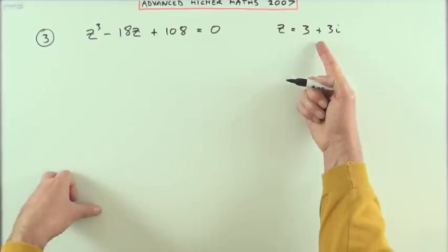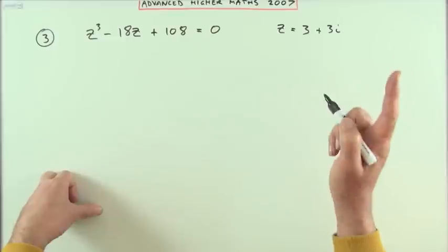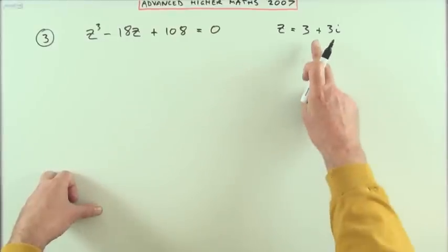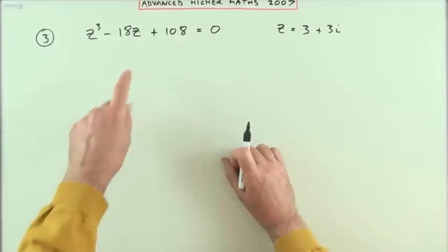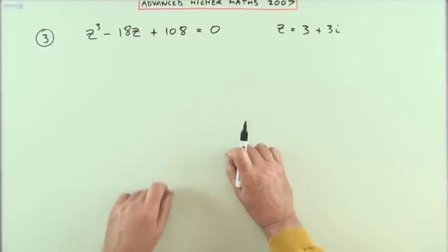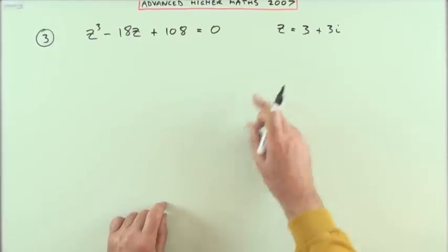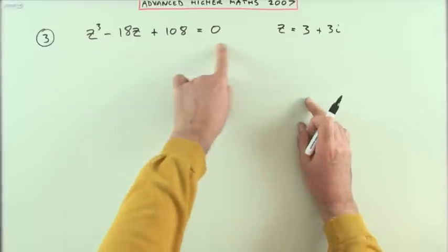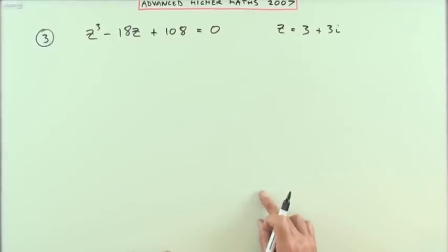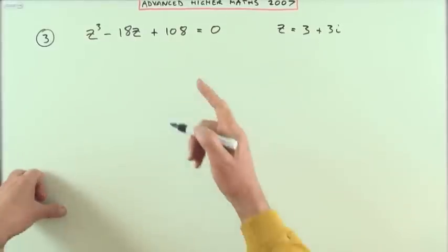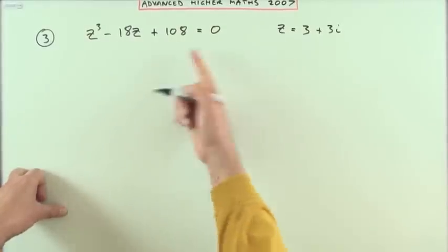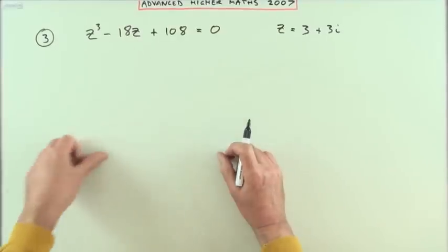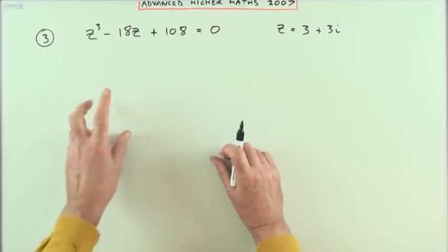If it says show that's a root, then strictly speaking what it means is: show that it is a solution to this equation — show that if you put z equal to this the answer comes to zero. So the first part would be to make z equal to that.